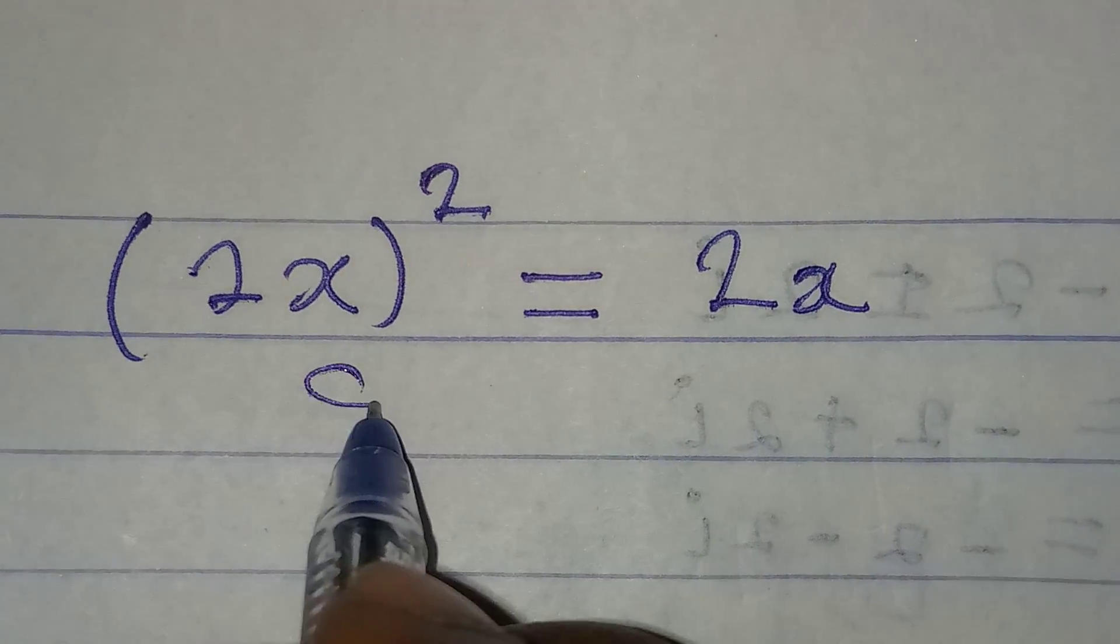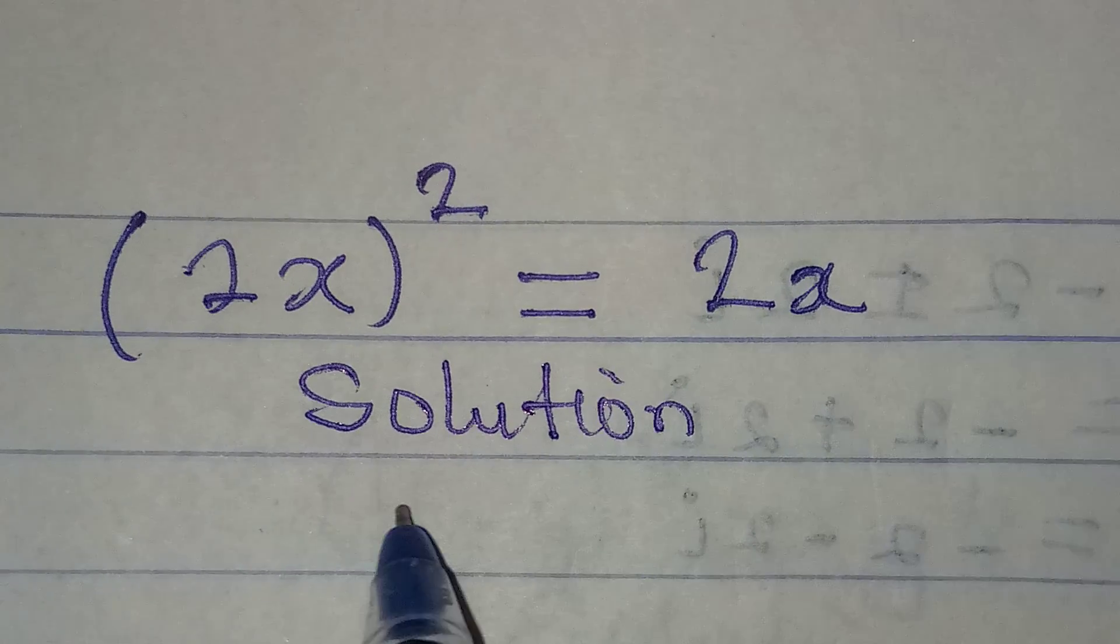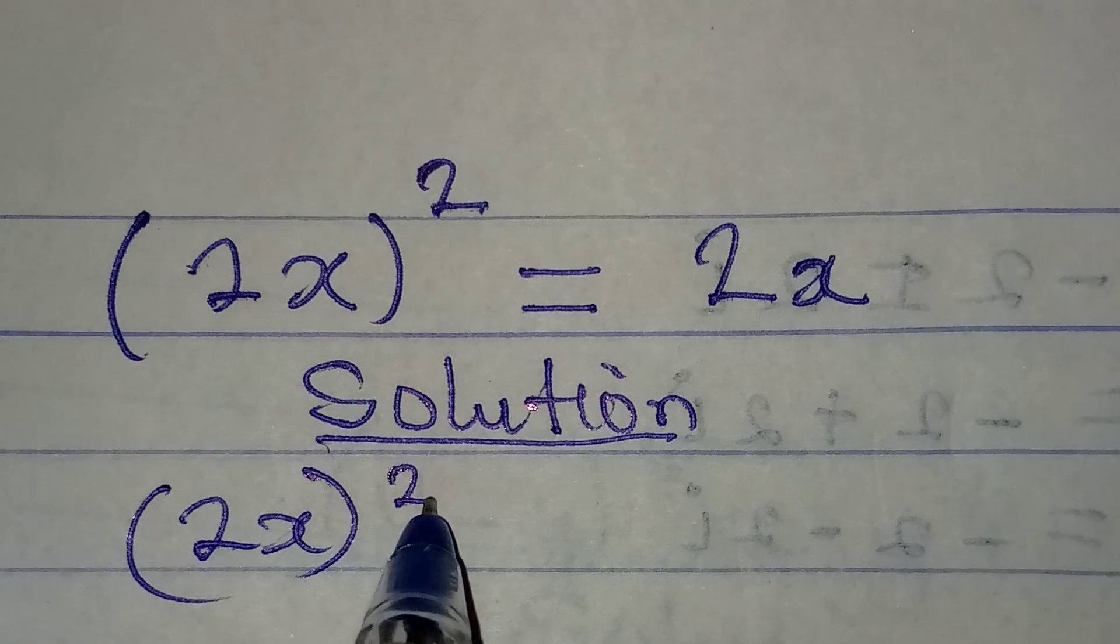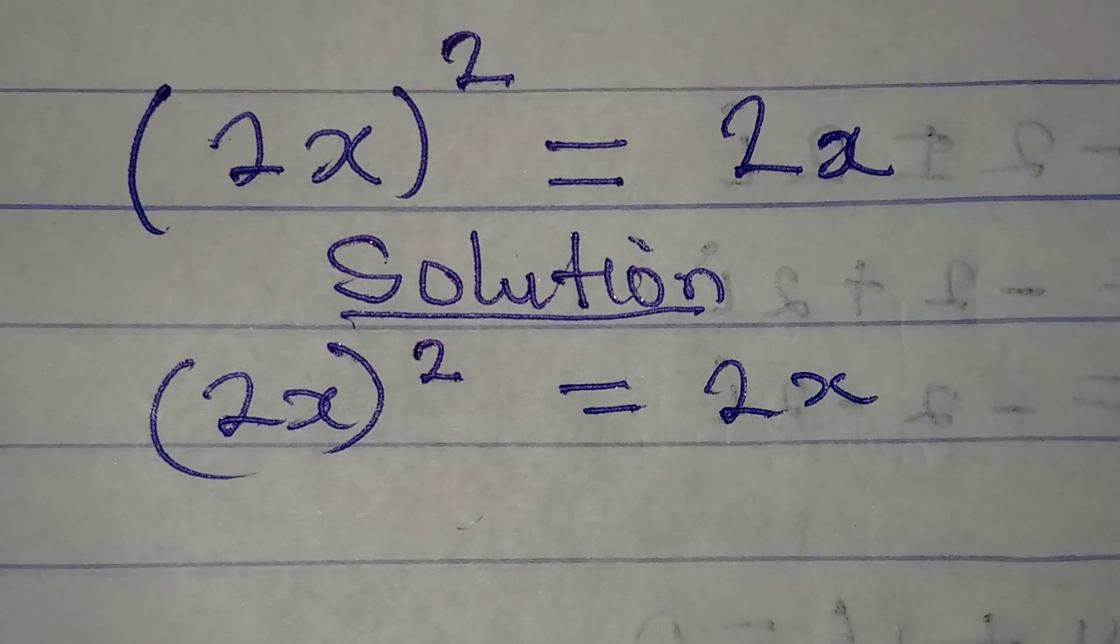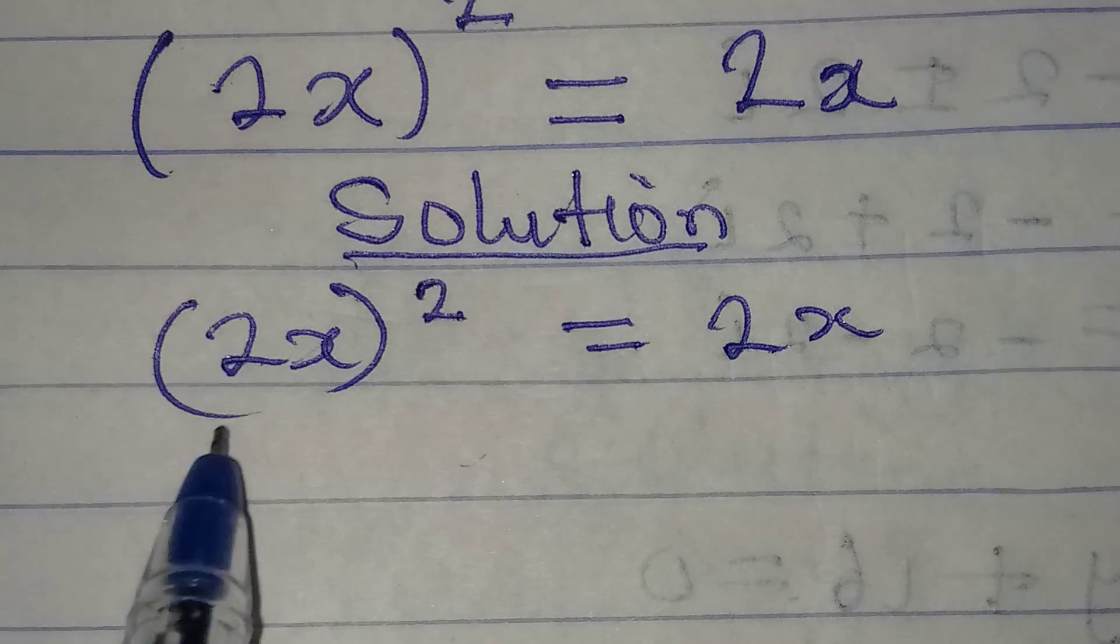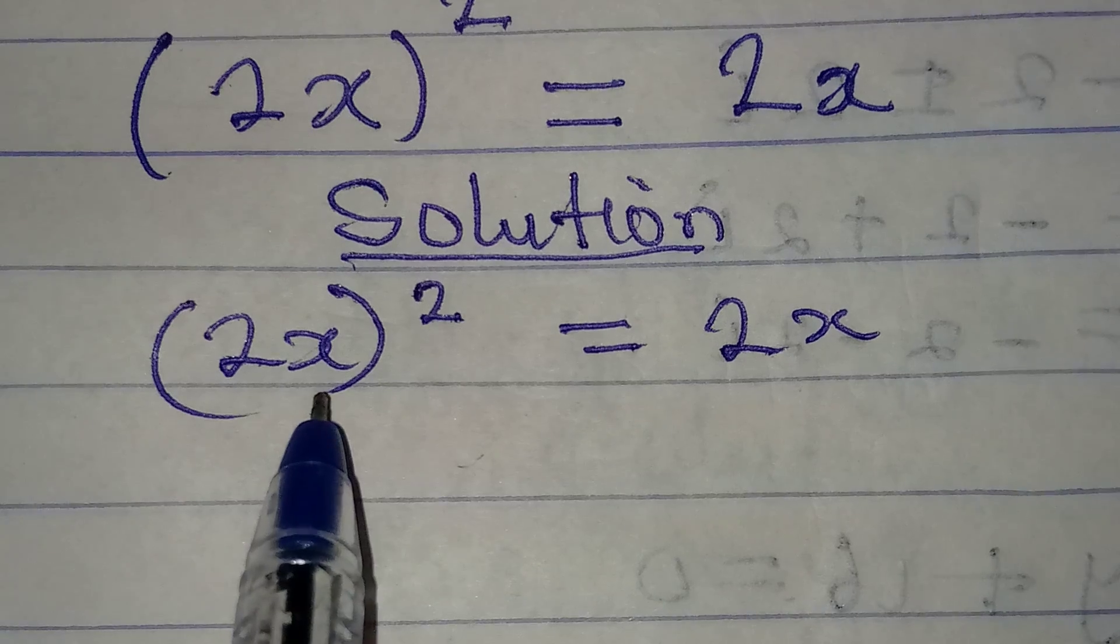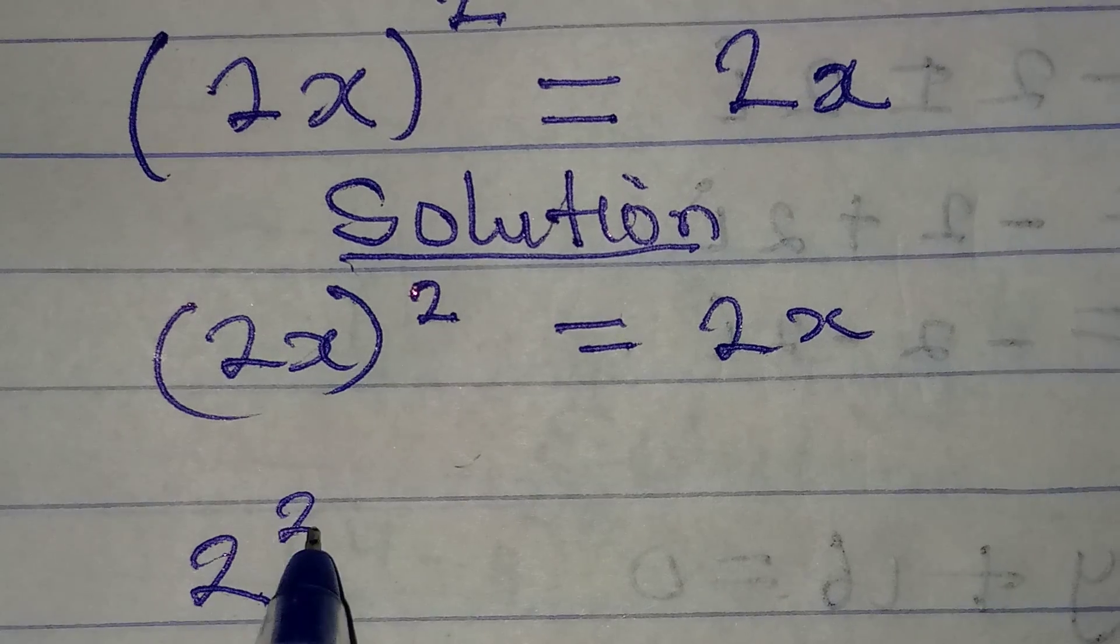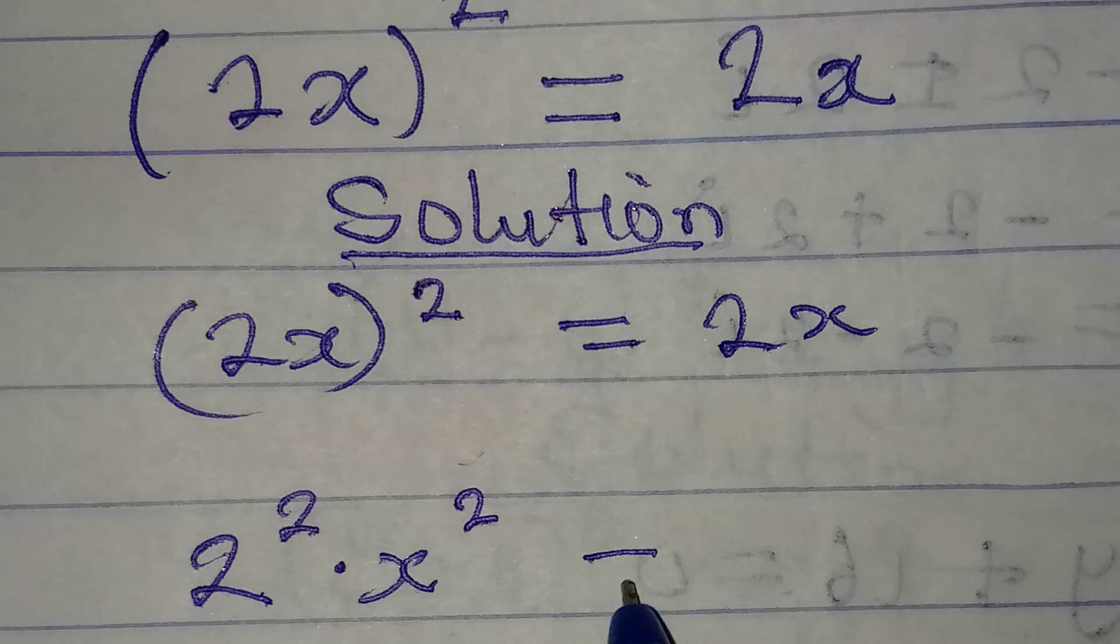Hello everyone, let's provide a solution to this problem. We have (2x)² = 2x. What will be the first step? Remember that if you have anything in bracket and it's squared, everything in the bracket will be squared. This is 2² multiplied by x², so this will now be equal to 2x.